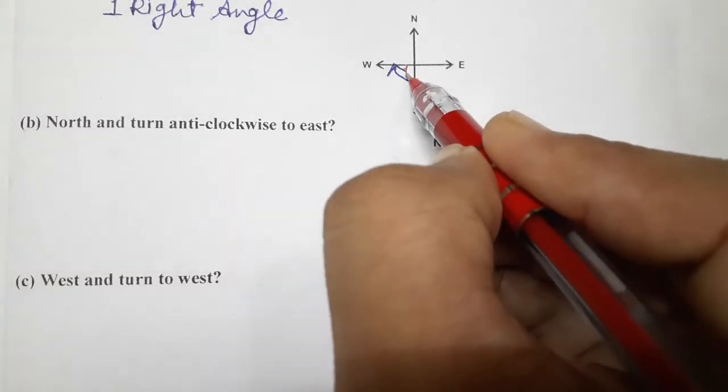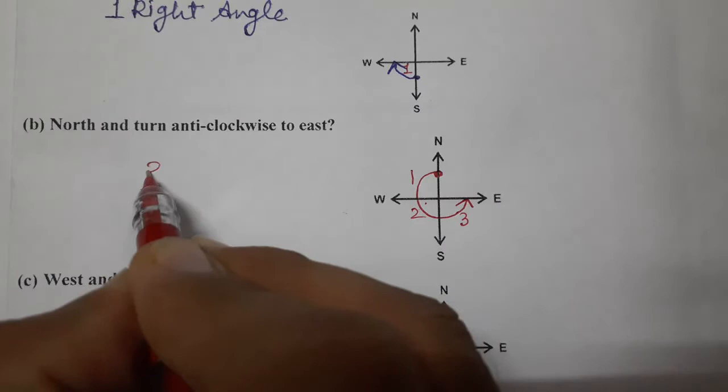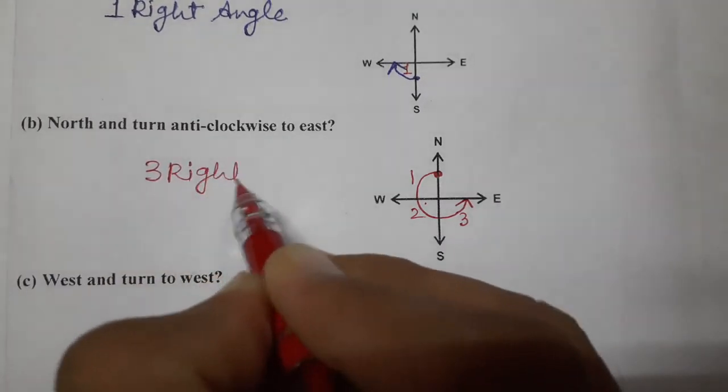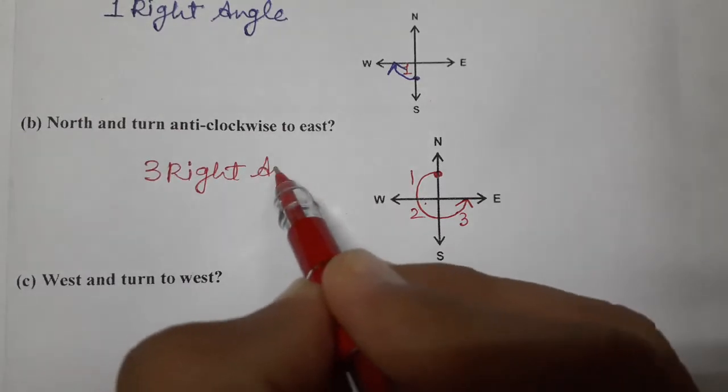And here one, so here three right angles. We only have to count how many right angles we have to move. So three right angles.